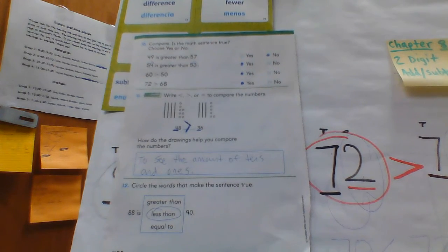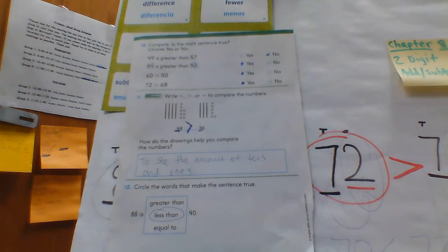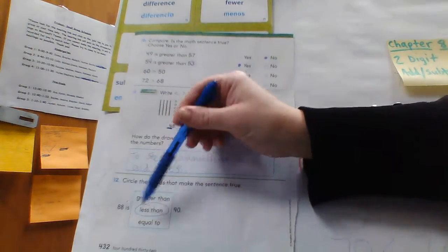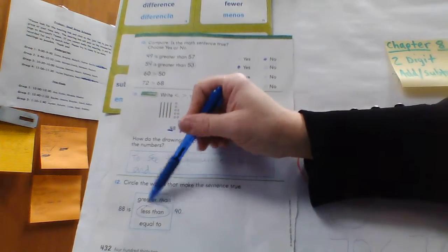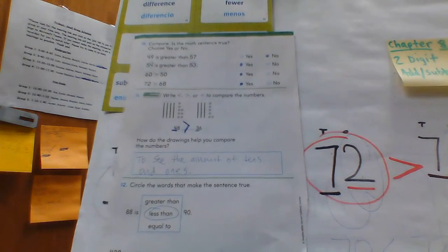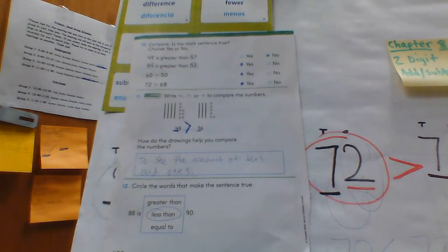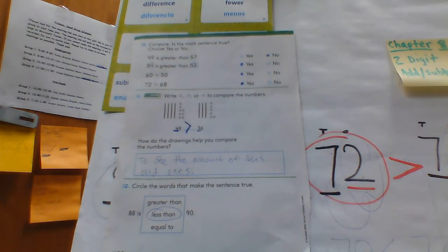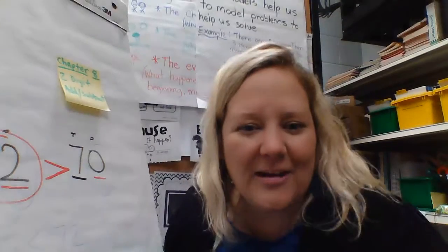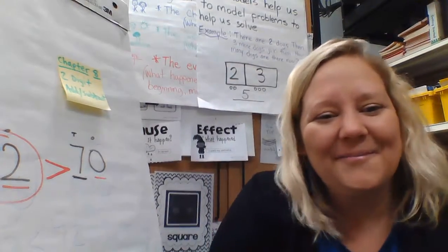Number twelve: circle the words that make the sentence true. Eighty-eight is less than ninety. Okay, that's all — I hope you guys did great! Have a good day, bye!